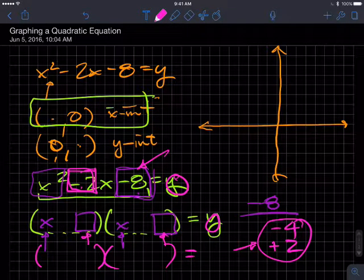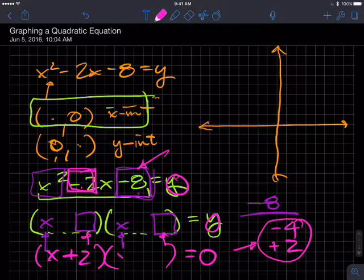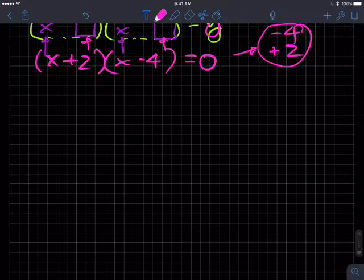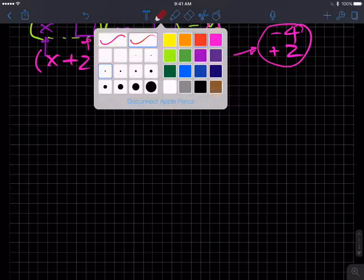This should be a 0. We get x plus 2 and x minus 4. Now, if we want to double check that that, in fact, is the correct answer.